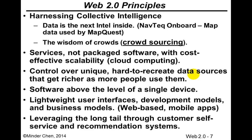In Web 2.0, we try to harness our collective wisdom and intelligence. For instance, the NavTech onboard system — the map data used by MapQuest — uses GPS devices in our cars and on our smartphones to provide traffic information. To use the wisdom of the crowd is what we refer to as crowdsourcing. I'm going to talk about this in much more detail.